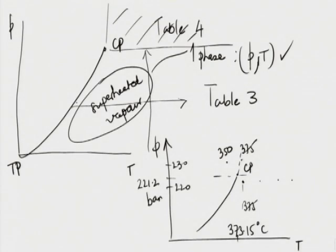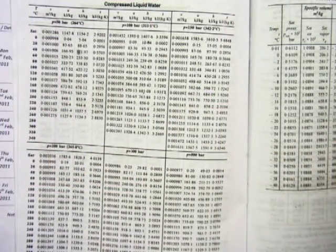That brings us to subcooled liquid states. Unfortunately the data for subcooled liquid is not fully tabulated. In recent editions, page 18, Table 5, there is a very crude tabulation of compressed liquid water — six tables in one, at pressures of 50, 100, 150, 200, 300, and 500 bar as a function of temperature, listing V, U, H, and S.